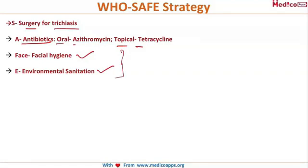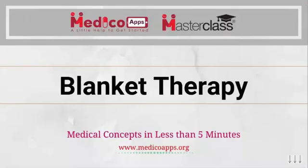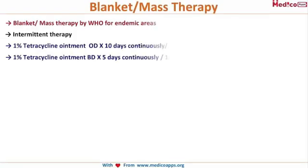To summarize the SAFE strategy: S for surgery for trichiasis, A for antibiotics, F for facial hygiene, E for environmental sanitation. Another concept for management of trachoma is blanket therapy, devised by WHO especially for endemic areas.